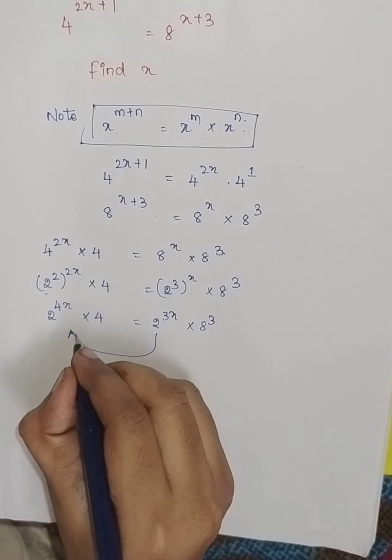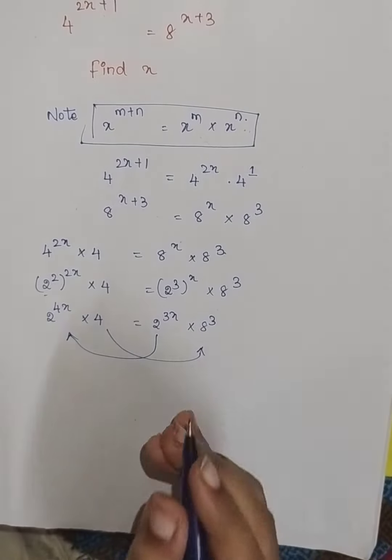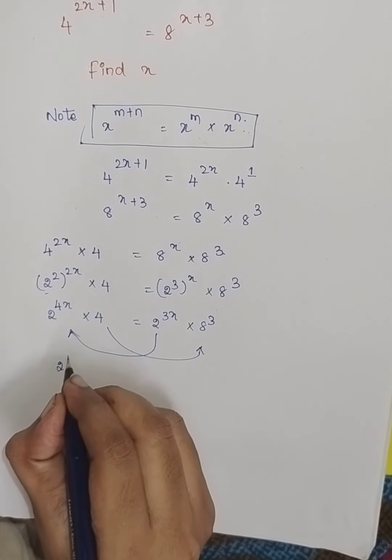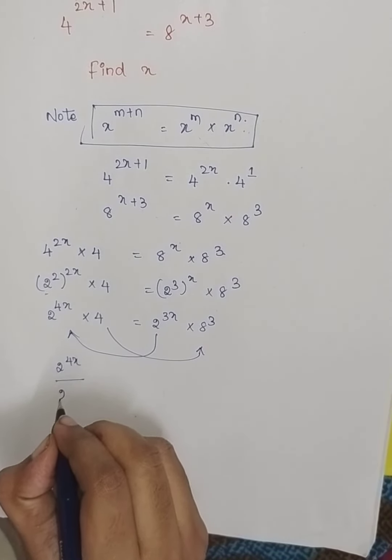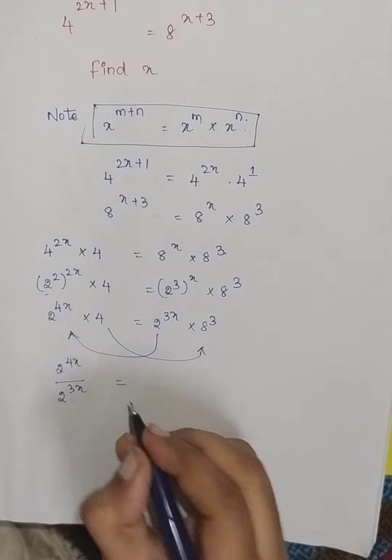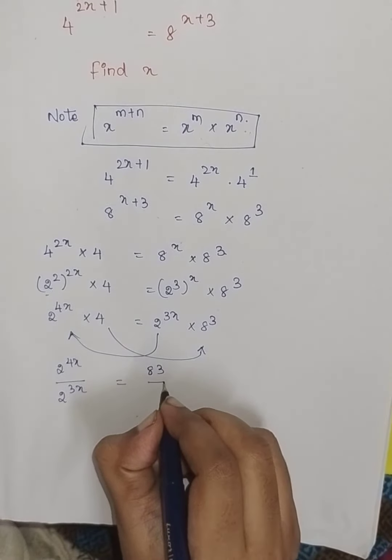So, this will come this side and this will go this side. I make x aside. So, 2 power 4x divided by 2 power 3x which is equal to 8 cube divided by 4.